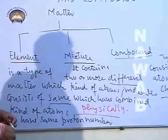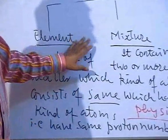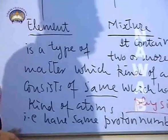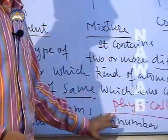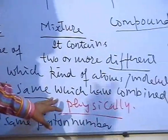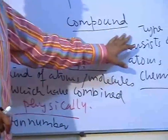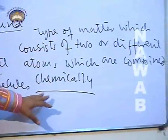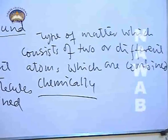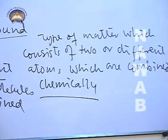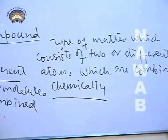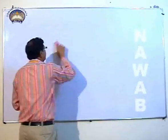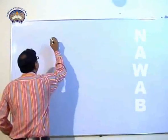So these are three different kinds of matter which differ on the basis of the type of atoms they have. If they have similar kind of atoms, they are called an element. If they have different kinds of atoms or molecules combined physically, they are called a mixture. And if they have two or more different kinds of atoms combined chemically, they are called a compound. First we will discuss the element in detail, then we will take up mixture and compounds.